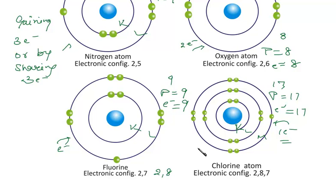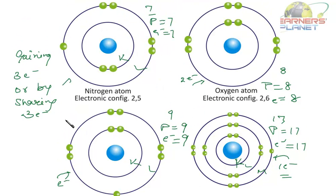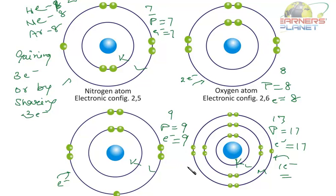So these atoms combine in order to complete their octets. Helium, neon, and argon don't form compounds because their valence shells are already complete — helium with 2 electrons, neon and argon each with 8. All other atoms complete their octets by gaining, losing, or sharing electrons. There are different types of bonds formed: the ionic bond and the covalent bond. A bond is a force of attraction between the atoms of two elements. Ionic and covalent bonds will be studied in detail in higher grades, but we will discuss cations and anions here.